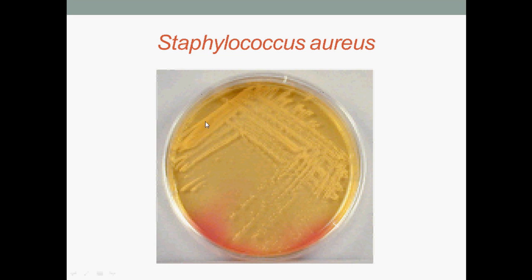This is mannitol salt agar with Staphylococcus aureus. As you can see, they form buttery yellow colonies because they produce an acidic by-product that causes phenol red in the media to turn yellow.